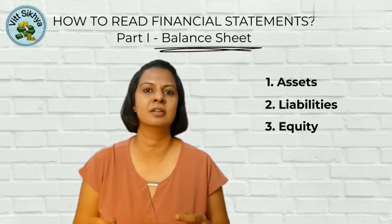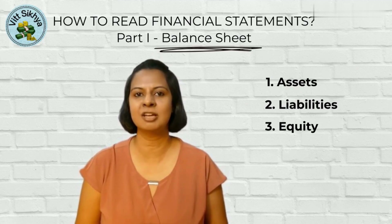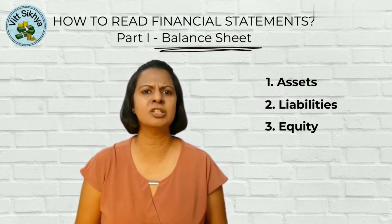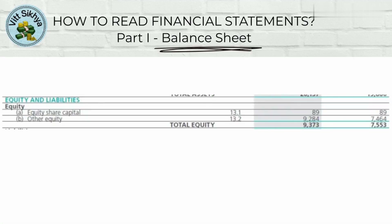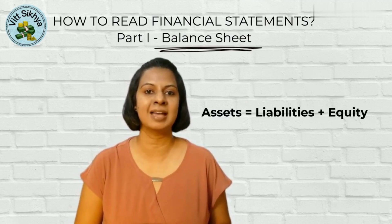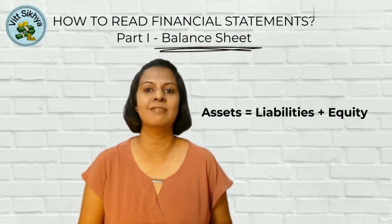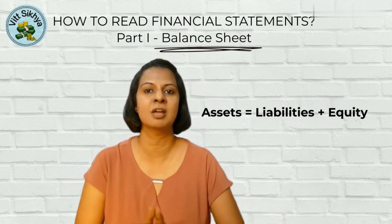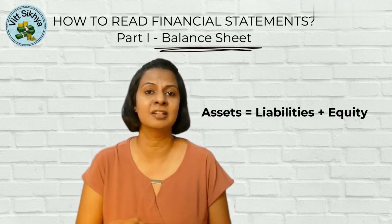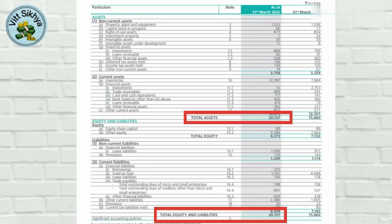Equity represents the net worth of the company — the residual interest after deducting liabilities from assets. It is sometimes referred to as shareholders' or owner's equity, and includes components such as share capital, retained earnings, other reserves, and accumulated comprehensive income. The balance sheet follows a fundamental equation: assets equal liabilities plus equity. In the case of Titan Limited, the sum of liabilities and equity equals total assets, i.e., Rs. 20,137 crores.